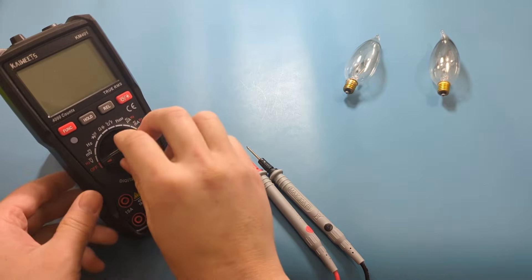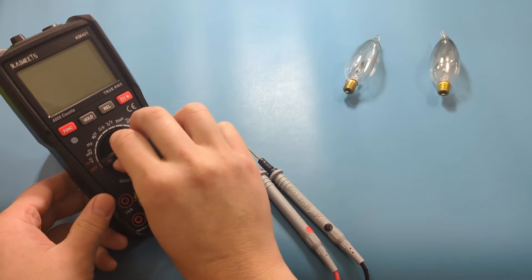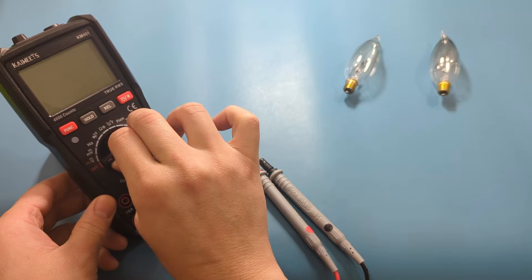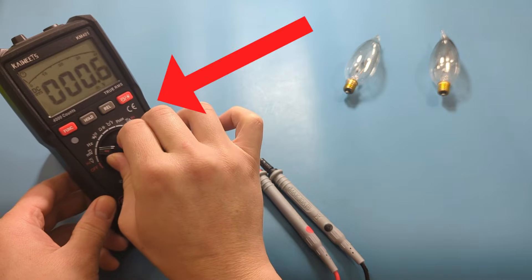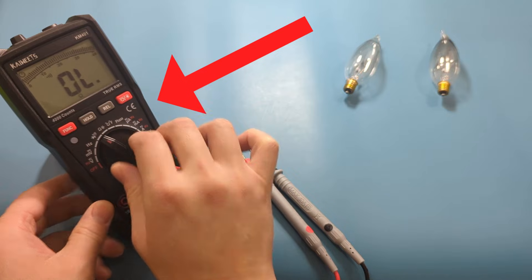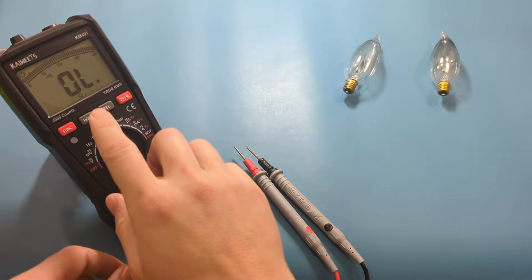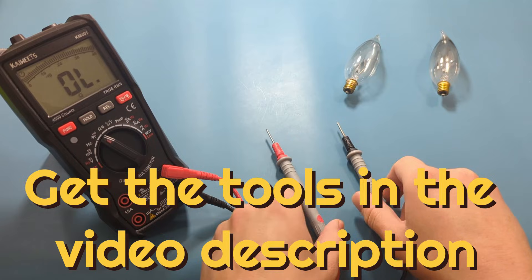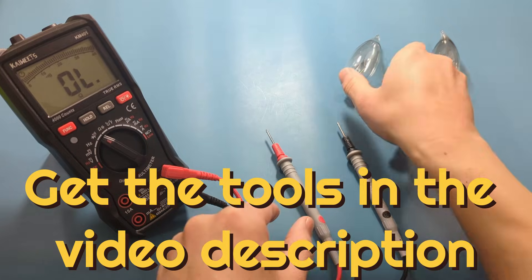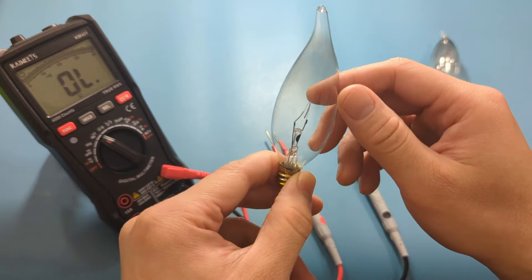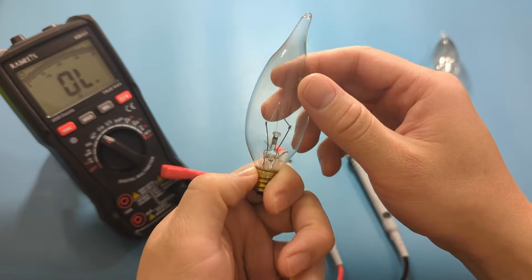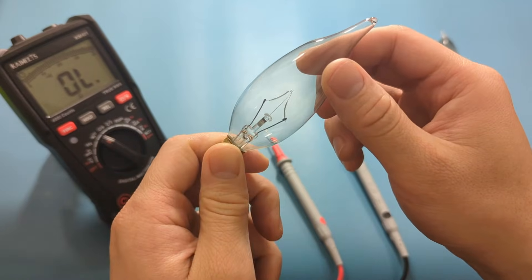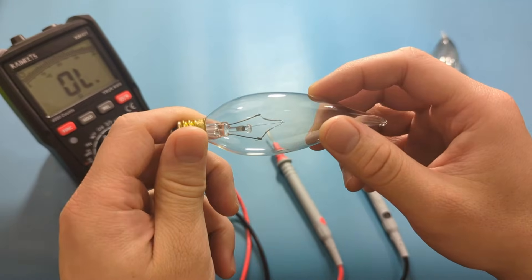The first test we're going to do is to check for continuity. Turn the dial to the continuity mode. An incandescent light bulb has a wire filament inside the glass bulb. The filament looks fine inside this bulb.